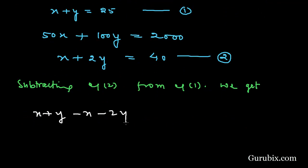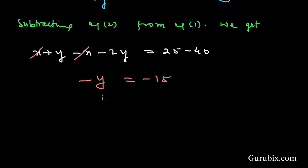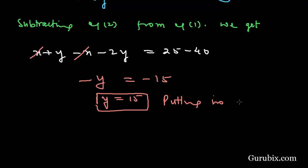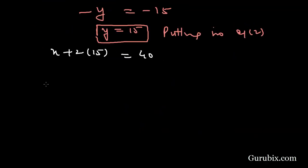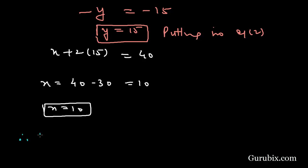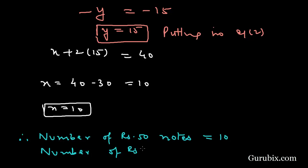The x terms cancel out, leaving minus y equals minus 15, which means y equals 15. Substituting this value into equation 2, we get x plus 2 times 15 equals 40, so x equals 40 minus 30, which gives x equals 10. Therefore, the number of rupees 50 notes is 10 and the number of rupees 100 notes is 15. This is the solution to our question. Thank you.